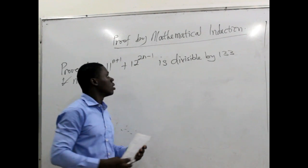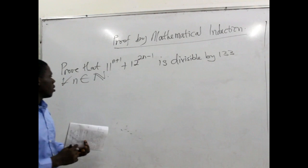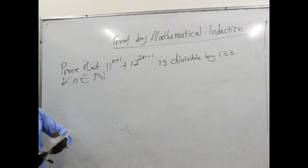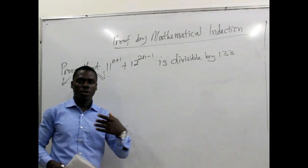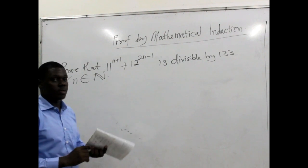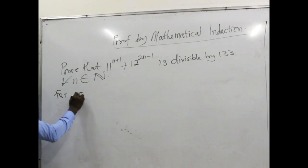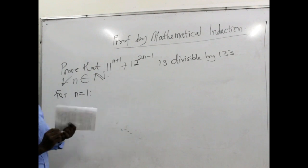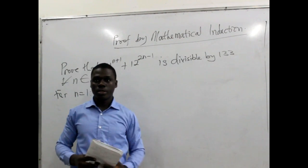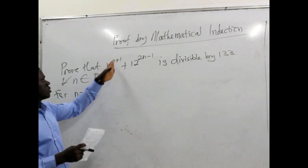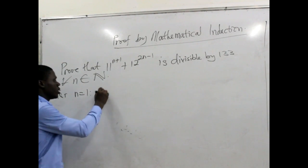We are doing this under the heading mathematical induction. What we need to do as far as mathematical induction is concerned is to see whether this statement is true for the first element of the set of natural numbers. For n equals 1, we want to see whether this particular statement is divisible by 133. So we just substitute n equals 1 into this particular expression. So we are having 11 to the power of 1.